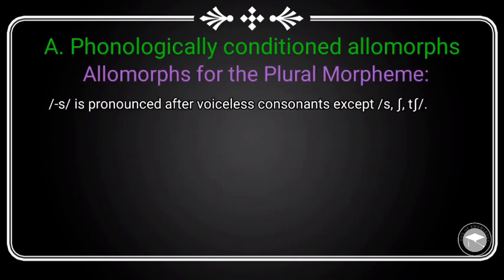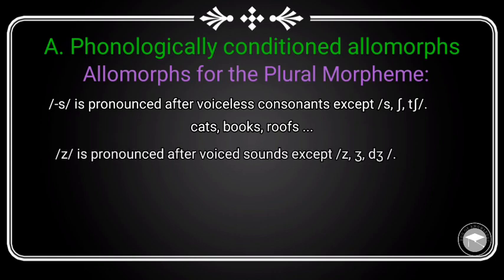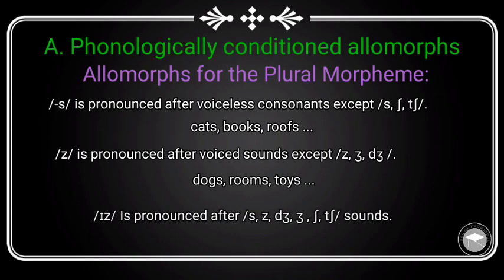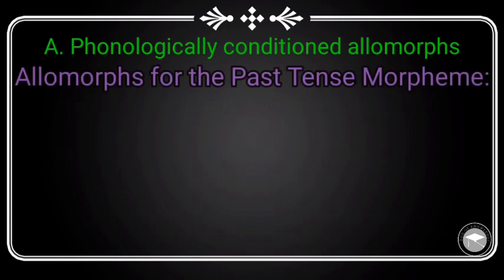مثلا في الجمع، اس كيختلف نطقها حسب شنوجة قبل منها. كتنطق /s/ after voiceless consonants — معدى الأصوات /s/، /ʃ/، /tʃ/ — مثال: cats، books، roofs. وكتنطق /z/ إلا جات بعد voiced sounds — معدى /z/، /dʒ/ — مثال: dogs، rooms، toys. وكتنطق /ɪz/ إلا جات بعد هالأصوات /s/، /z/، /dʒ/، /ʃ/ — بحال: branches، dishes، buses، fridges.